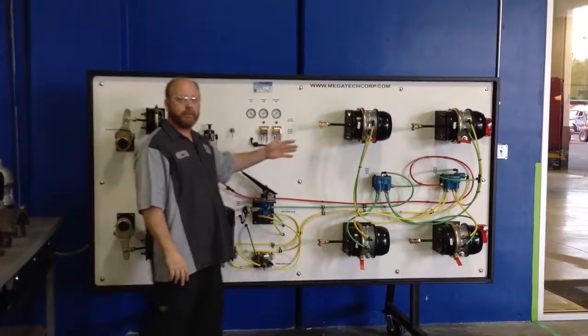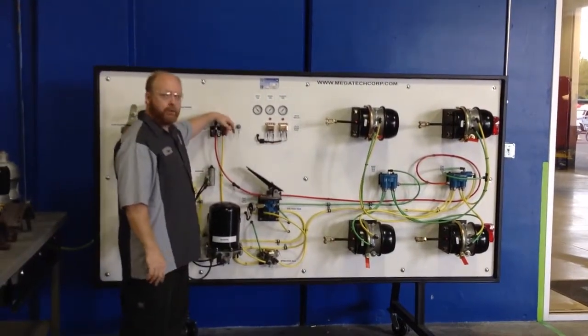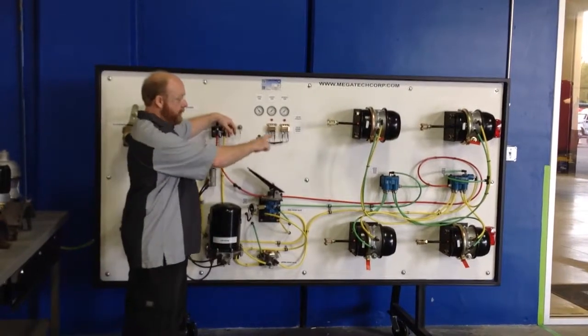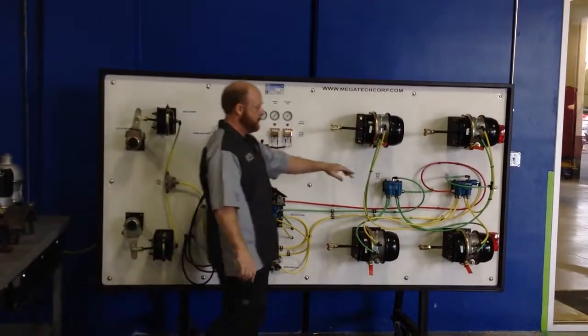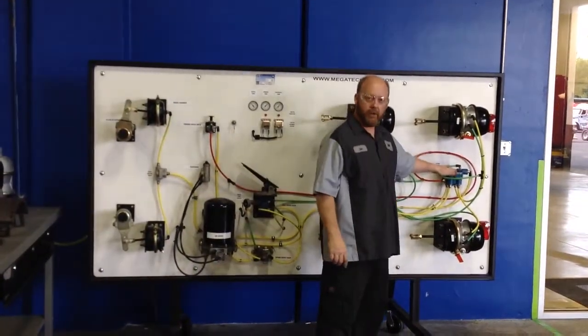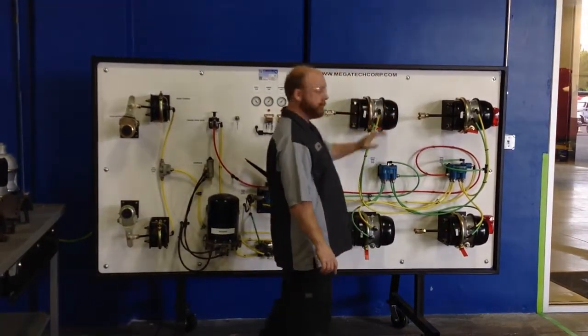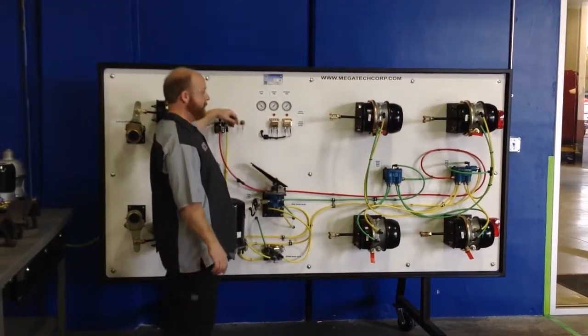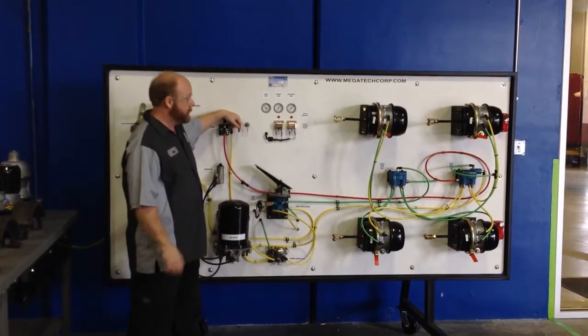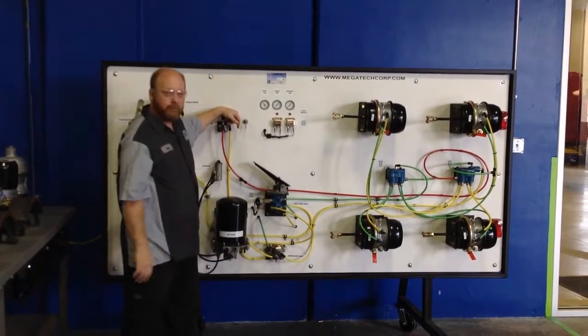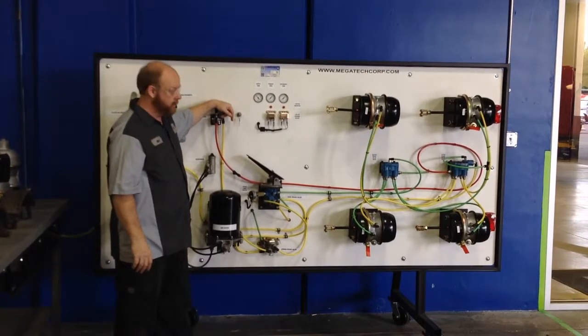I'm going to release the spring brakes by supplying air. So I use the parking brake valve, and it's going to plumb air to the spring brake relay valve. It operates just like the service brake relay does and will charge the air from the back sides of those diaphragms and compress the springs. You'll see the brake rods and clevises move as the brakes release.